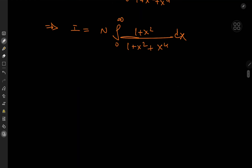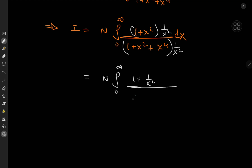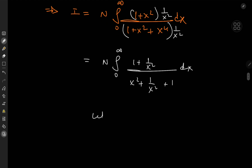This kind of integral is actually pretty straightforward. We divide numerator and denominator by x², giving n times the integral from zero to infinity of (1 + 1/x²) over (x² + 1/x² + 1). We can write x² + 1/x² as (x − 1/x)² + 2 + 1, which sets up a nice substitution.